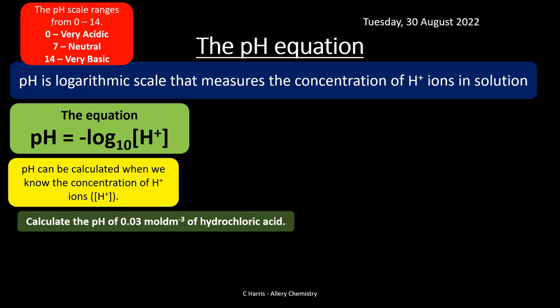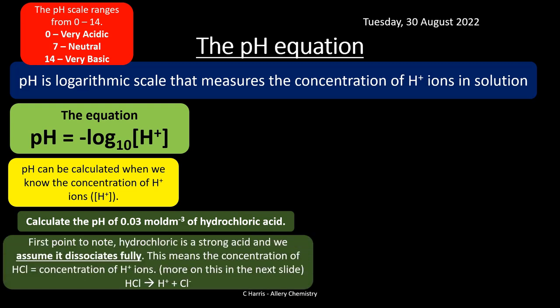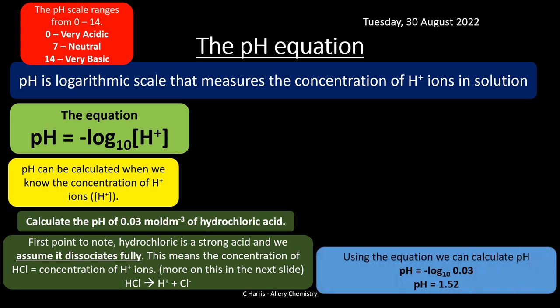Let's look at an example — we're going to calculate the pH of 0.03 mol dm⁻³ of hydrochloric acid. Hydrochloric acid is a strong acid, so our assumption is that it dissociates fully; all HCl molecules dissociate to produce H+ ions and Cl− ions. This means the concentration of HCl equals the concentration of H+ ions. Using the equation pH = −log[H+] with [H+] = 0.03, we get a pH of 1.52.